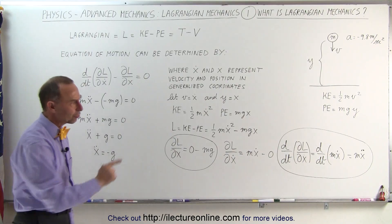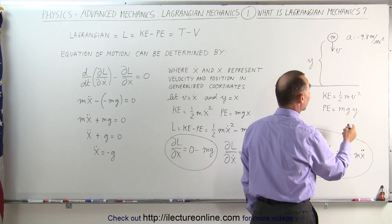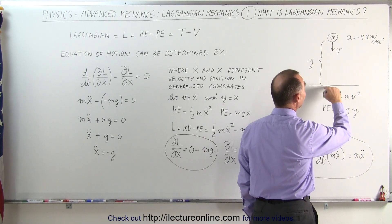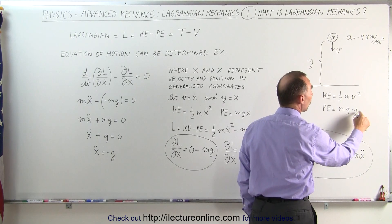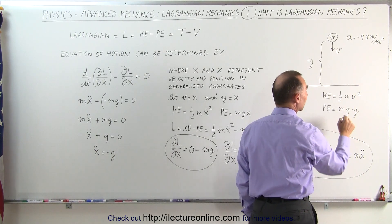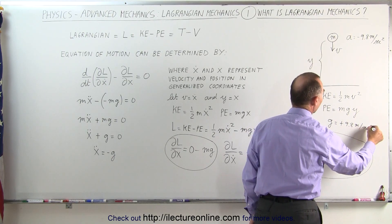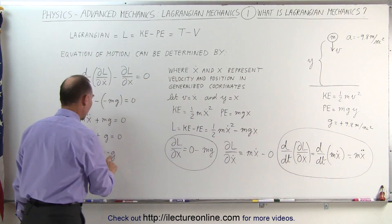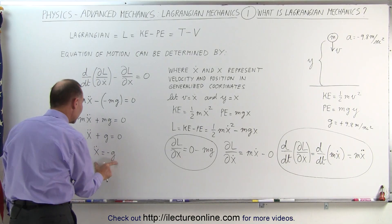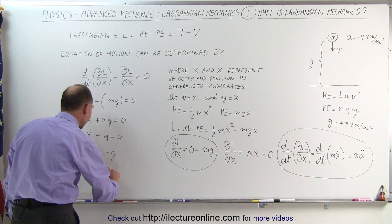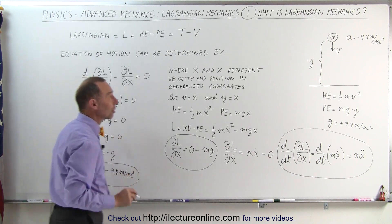What is g here? G is a positive 9.8 meters per second squared. The potential energy is zero at height equals zero, and as you go above that position the potential energy is positive, which means g must be a positive quantity. So x-double-dot equals minus a positive number, which is negative. X-double-dot is simply the acceleration of the object, meaning acceleration equals minus 9.8 meters per second squared — which is indeed what happens to an object in free fall.